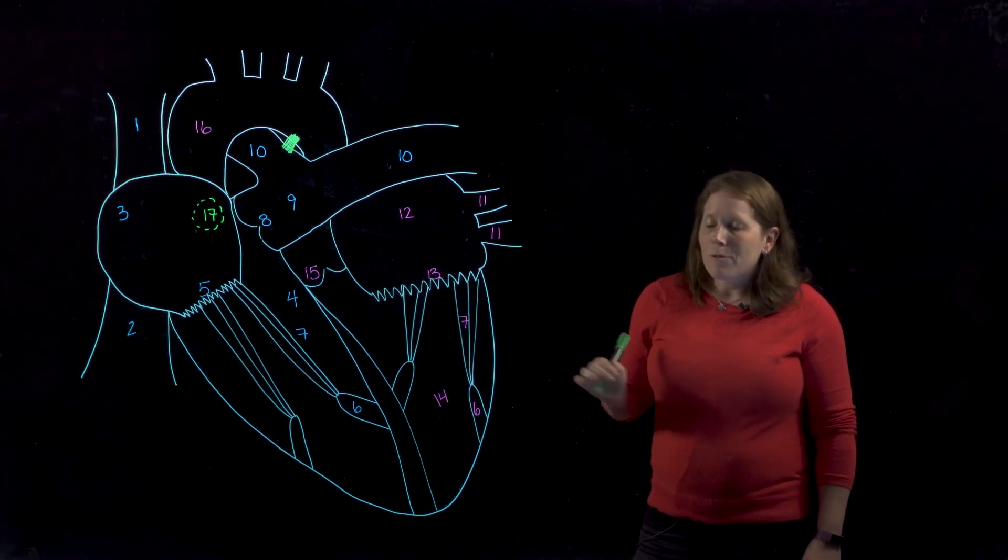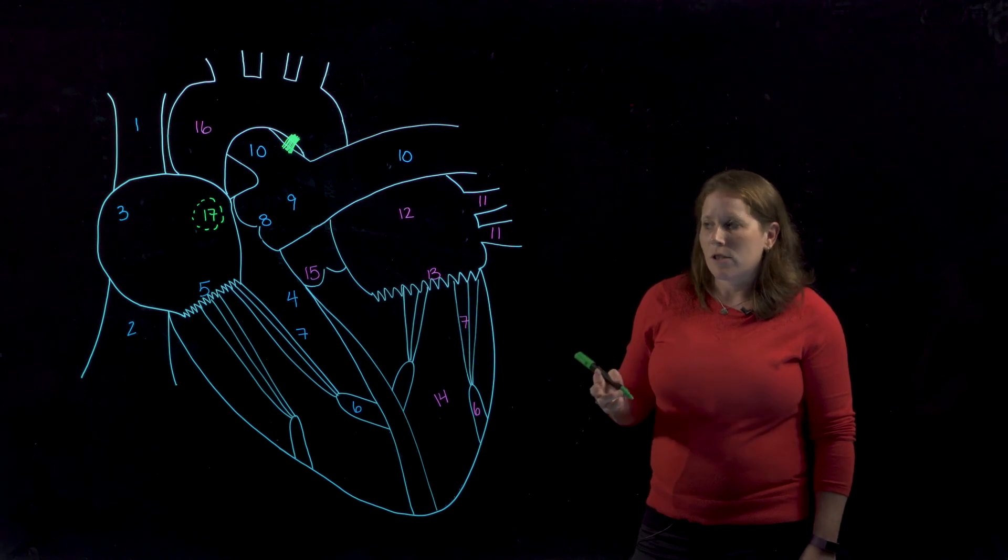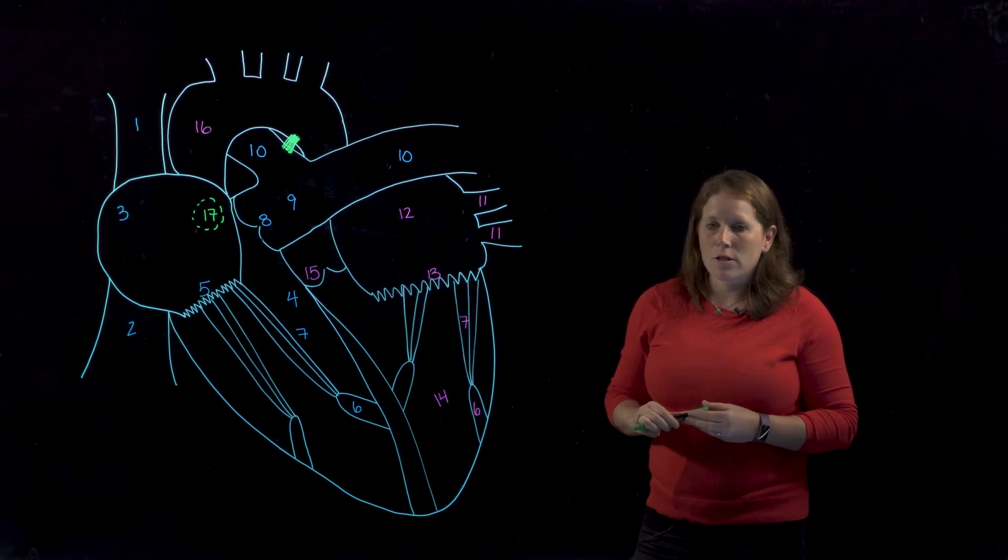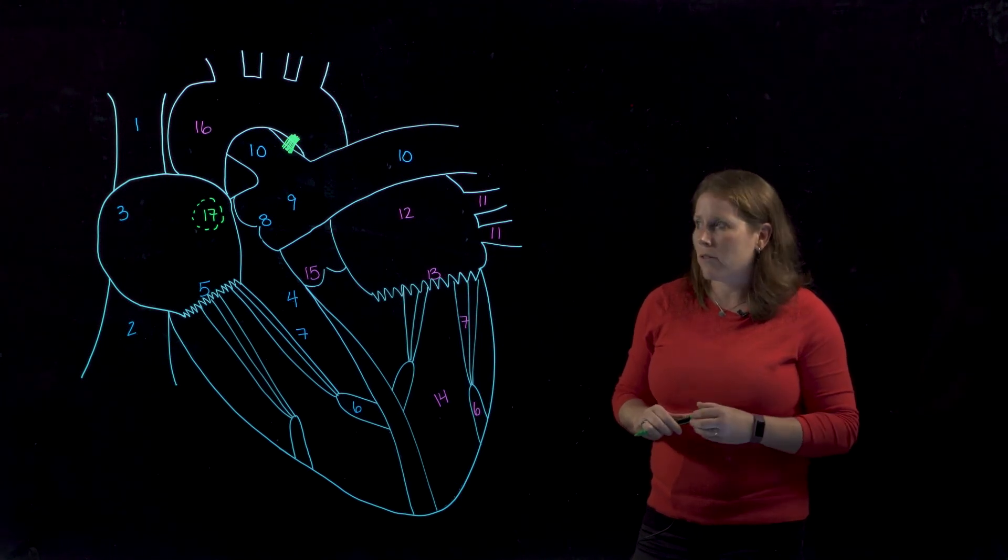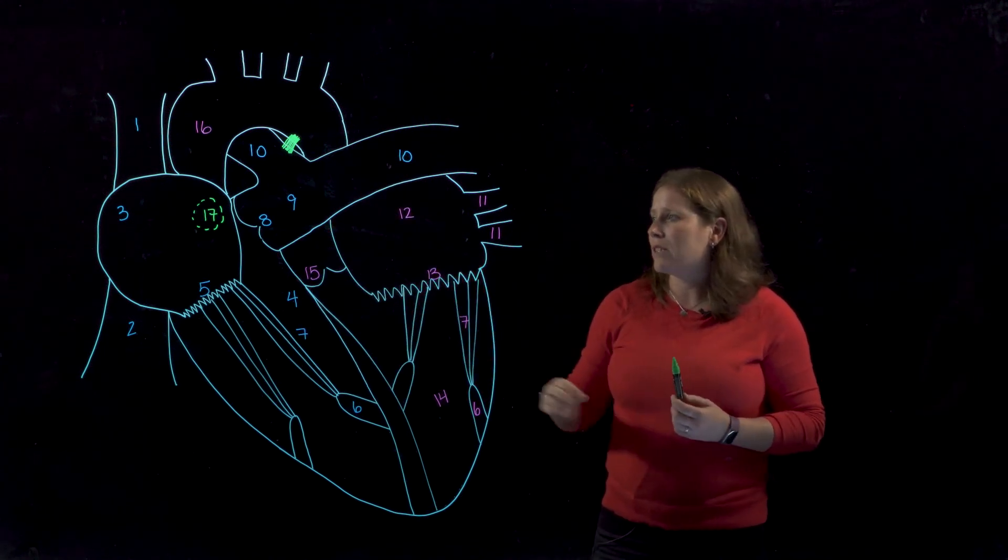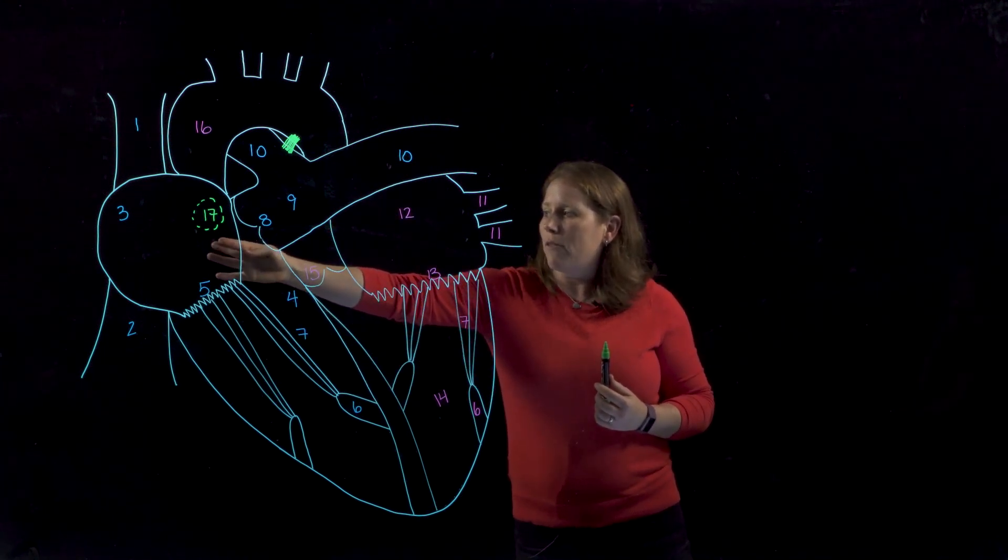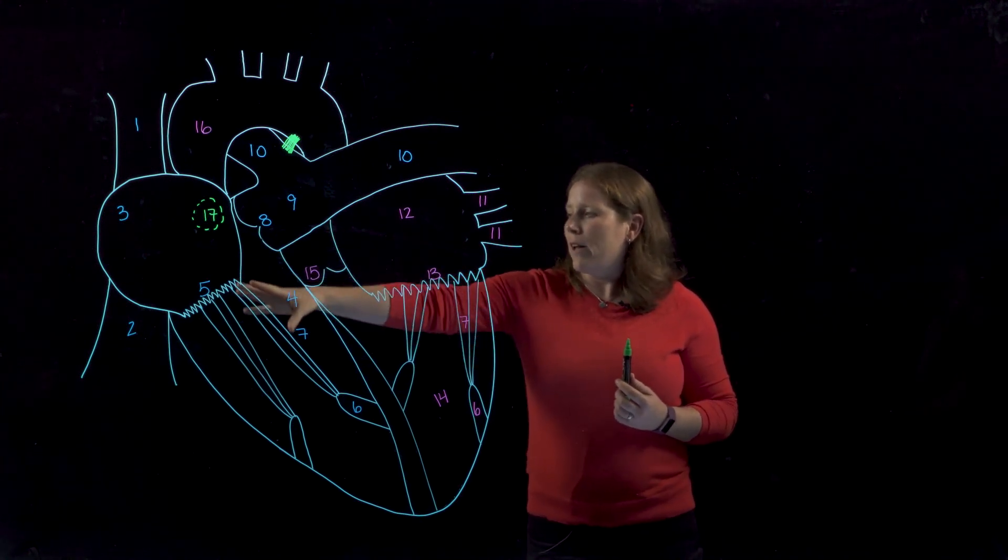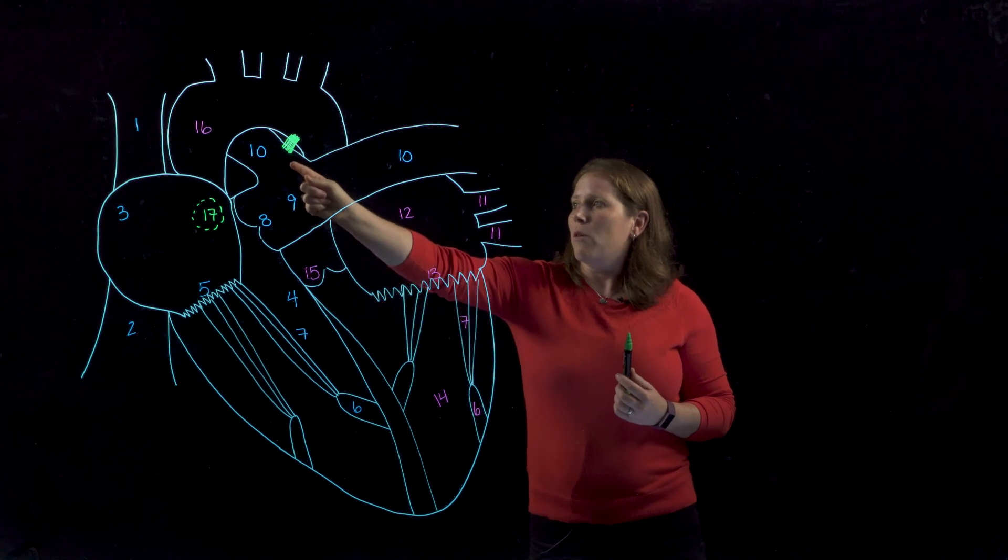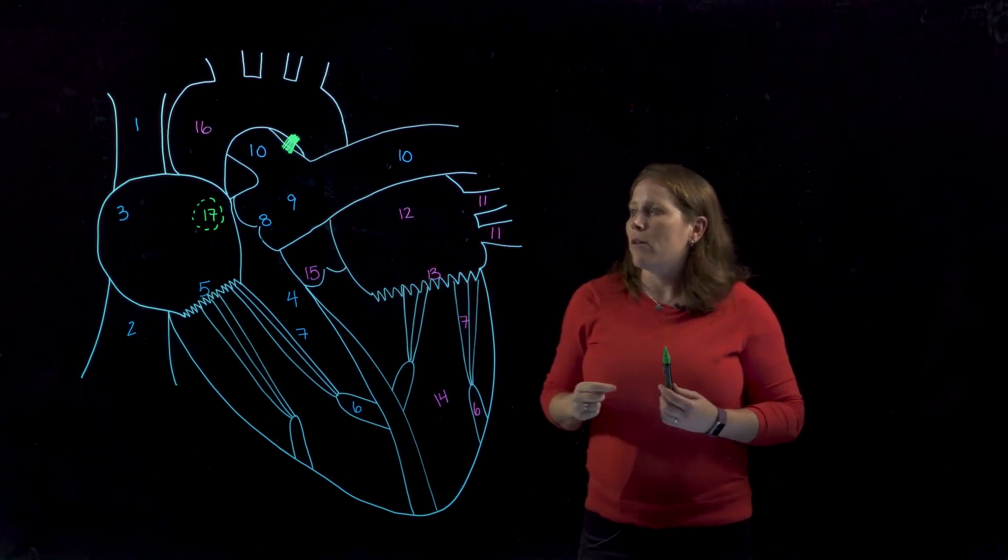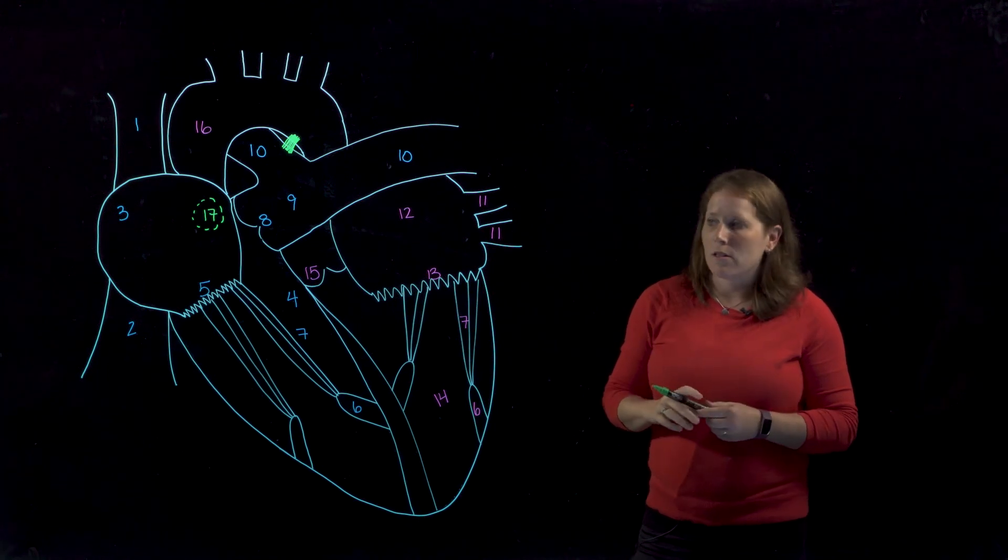The purpose for both of these anatomical structures is essentially the same. In the fetal heart we don't send blood to the lungs for oxygenation. That actually happens through the circulation with the mother. And so we would like to avoid this pathway as much as possible. So we allow blood to travel from the right atrium directly into the left atrium. And if any blood were to follow this pathway we then allow it to pass from the pulmonary trunk into the aorta directly as opposed to going to the lungs.